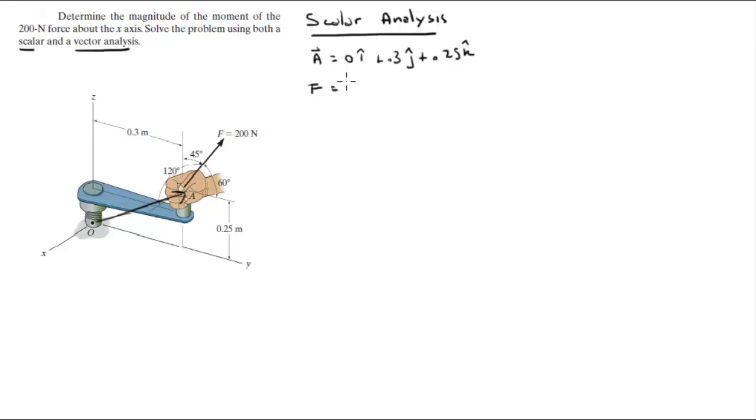F is given - all the coordinate direction angles are given, so this is very easy to calculate. This is 200 cosine 120i plus 200 cosine 60 in the j plus 200 cosine 45 in the k. So this comes out to be minus 100 in the i plus 100 in the j plus 141.4 in the k.